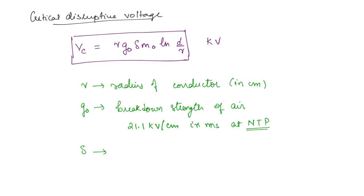This is the air density correction factor. This is given by 3.92 B by 273 plus T. Here B is the pressure, the barometric pressure in centimeters.